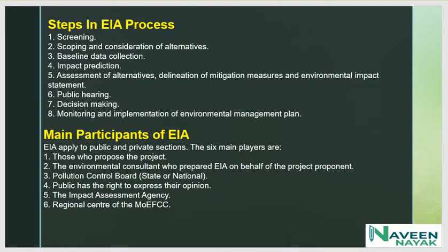The steps in the Environment Impact Assessment process are: first, screening; second, scoping and consideration of alternatives — if the project affects the environment, they look for alternative protection measures; third, baseline data collection; fourth, impact prediction; fifth, assessment of alternatives, delineation of mitigation measures, and environment impact statement; sixth, public hearing; seventh, decision making, monitoring and implementation of the environment management plan.